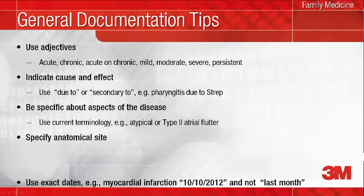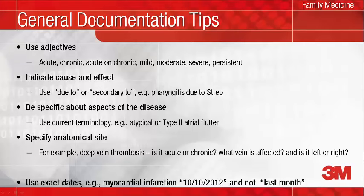Such as acute systolic heart failure due to or secondary to hypertension, or pharyngitis due to streptococcus group A. Think about the most current terminology to describe the condition or different aspects of the disease. For example, paroxysmal versus persistent atrial fibrillation, or typical or type 1 versus type 2 atrial flutter, or systolic versus diastolic heart failure, or both. Precisely designate anatomical sites such as deep vein thrombosis, identifying the specific vein, which leg — left or right — and whether it is an acute or chronic DVT.